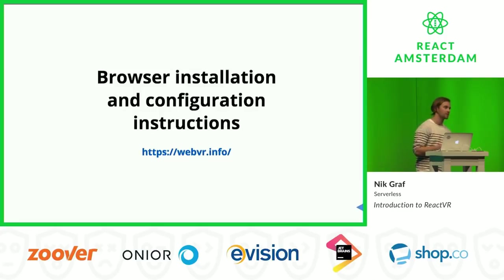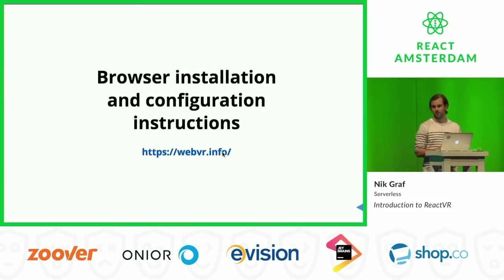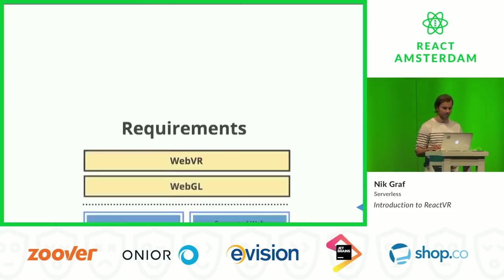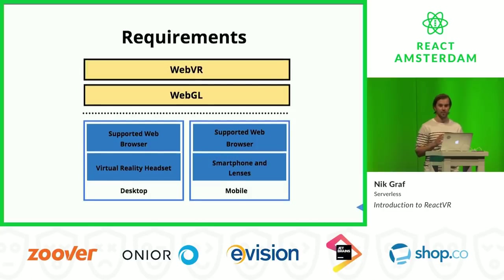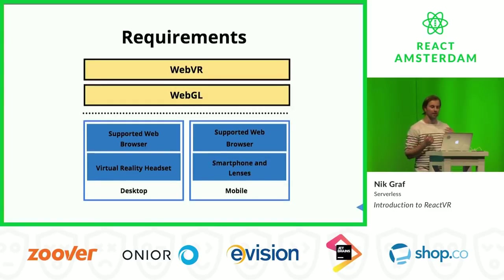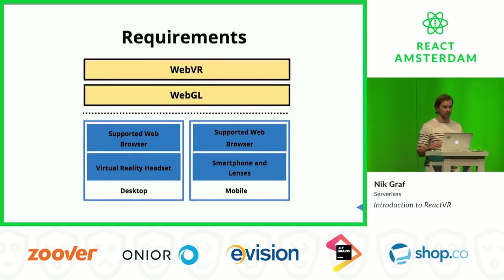Right now you still need to follow a couple of instructions and enable custom flags in the browser. But you can do it, and there's webvr.info where you get instructions for every browser and setup to get up and running. The interesting thing is WebVR is just a thin API to connect to the device — the rest is still the web. It's WebGL, it's a canvas, nothing special. So we can use all the existing tools to render 3D scenes and panoramas, and you don't have to learn a completely new API.